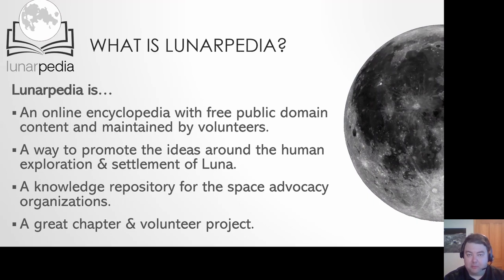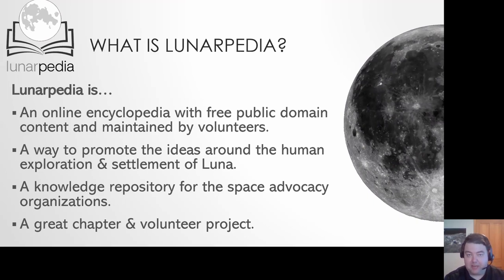Lunarpedia can also be a project wiki — a place for people to share information about what they're doing and store things like procedure steps. In the corporate world, people use wikis as a place for knowledge to be stored and maintained over time. If an organization has a lot of procedures and processes, they'll have them in a wiki and people can maintain and make changes as those processes change. All space advocacy organizations like the Moon Society can use Lunarpedia as a place to share and store knowledge.